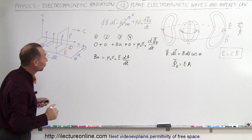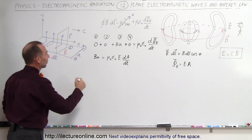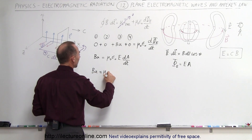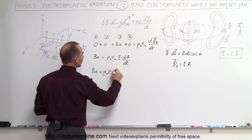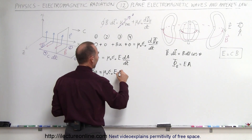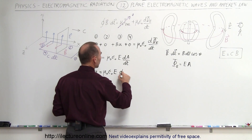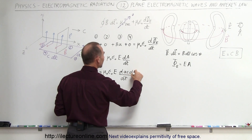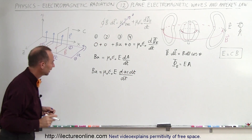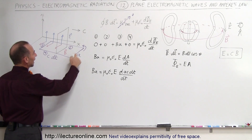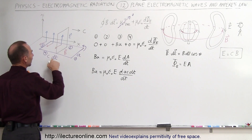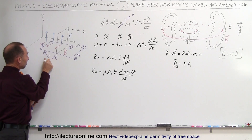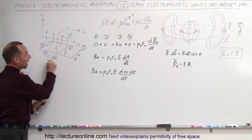The area is equal to the width times the length. So this becomes B times A equals μ₀ε₀ times E times the change with respect to time of A times C times dt. That would be the area: A times the length here, which is C times dt. Remember, distance is velocity times time — distance is velocity C times the time dt.